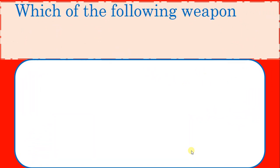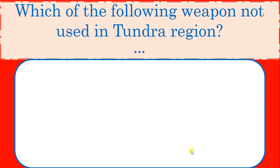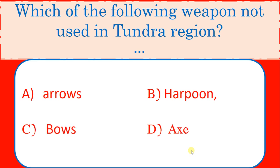Which of the following weapon not used in Tundra region? Options: Arrows, Harpoon, Bows, Axe. Correct answer: Axe.